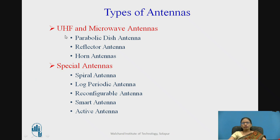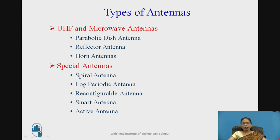Another category is UHF and microwave antennas, which includes parabolic dish antenna, reflector antenna, and horn antenna. Some special types of antennas also exist, such as spiral antenna and log-periodic antenna — these are called special because they are frequency-independent antennas. Also in this special category are reconfigurable antennas, smart antennas, and active antennas.